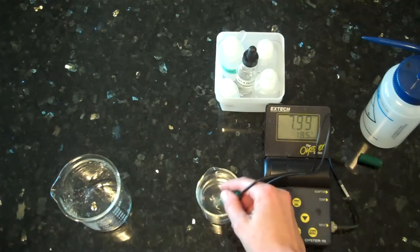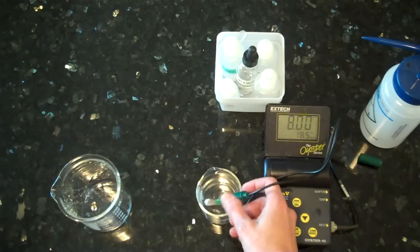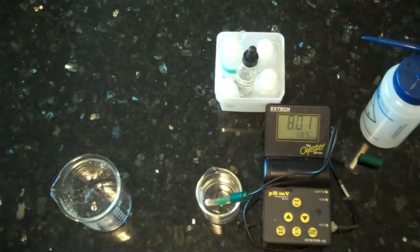This is settling at a pH of about 8.01. That last digit often fluctuates slightly. Now it's at 8.02, but it is within plus or minus 0.05.